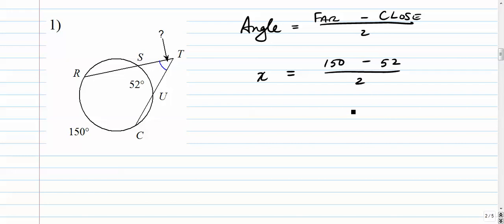So, 150 minus 52 is 98, over 2 should be 49. 49 degrees.